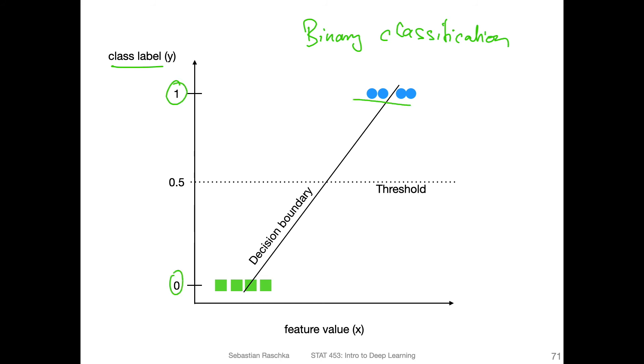The class labels can be either one or zero. Then we have only one feature value for simplicity here. We want to predict that, and the linear neuron is a linear model. Essentially, what it will learn is it will fit a linear line similar to linear regression. This would be very similar to linear regression.